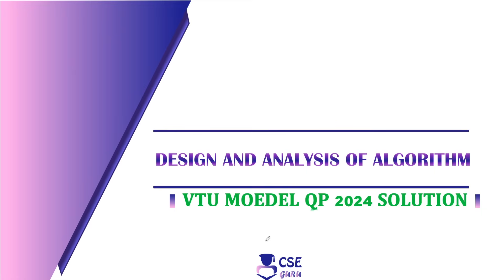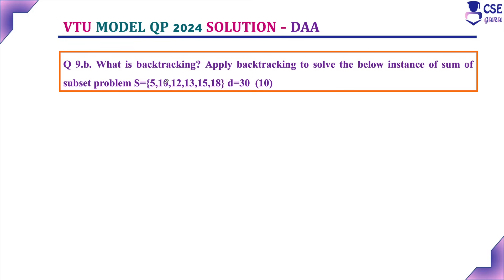Welcome to CSU Guru. In this session, we will discuss design and analysis of algorithms — BTU model paper 2024 solution. Question number 9b: What is backtracking? Apply backtracking to solve the below instance of the sum of subset problem. Here they have given a subset, and we need to find a sum d equal to 30. We need to apply backtracking technique to solve the subset sum problem and find the sum 30.